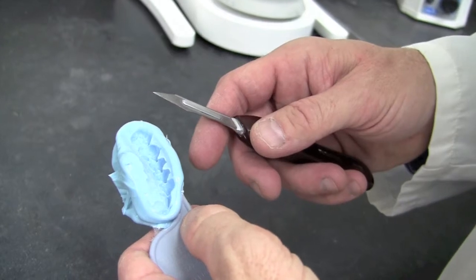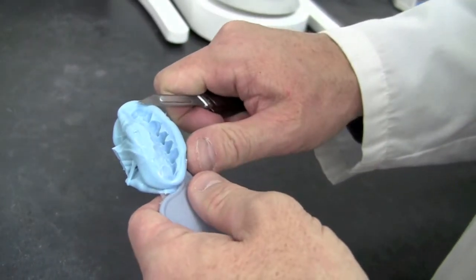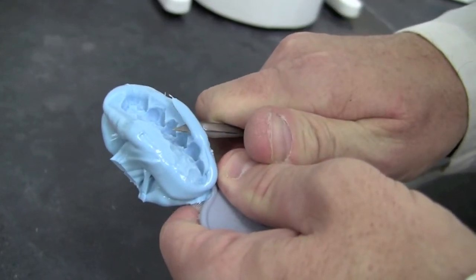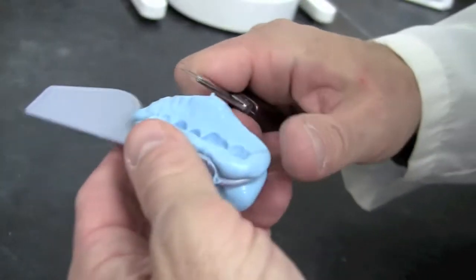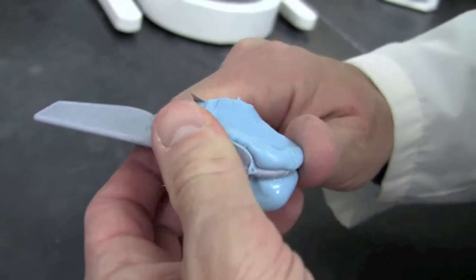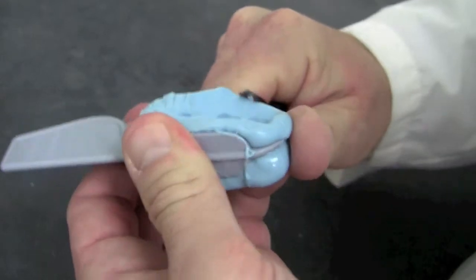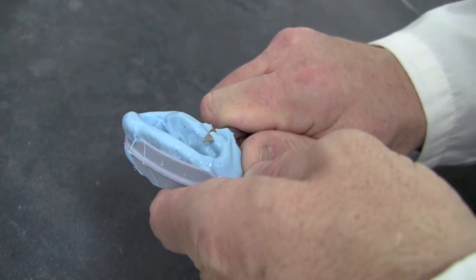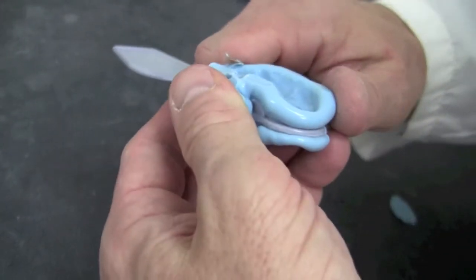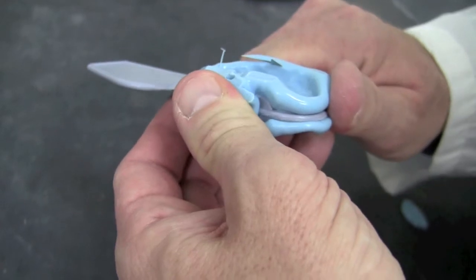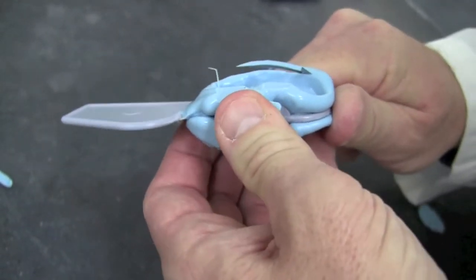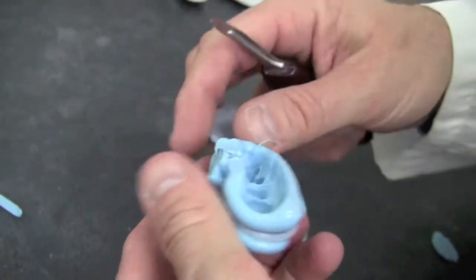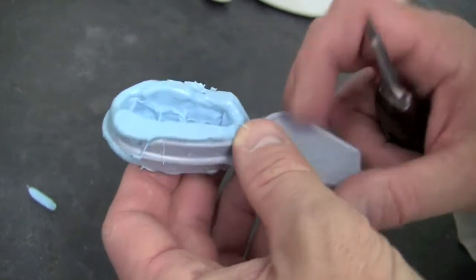The next step will be to trim our disinfected impression. What we're trying to achieve is to get a flat land area so we can mark where we're going to place our pins. That will allow us to make the marks where we need for our removable dies.